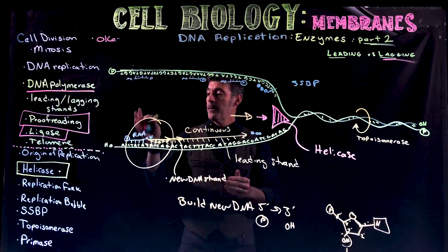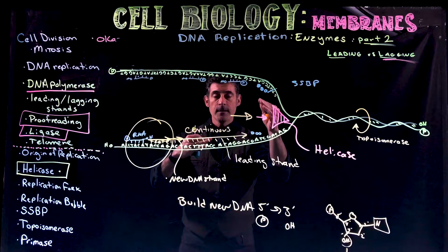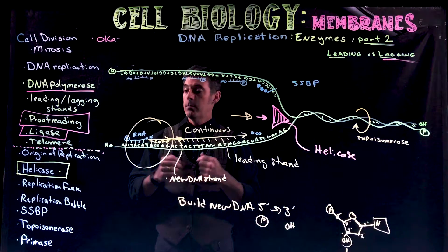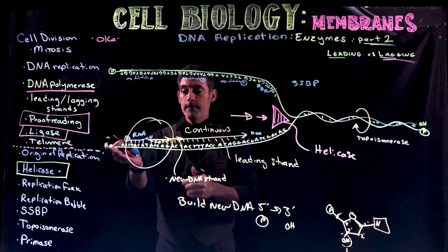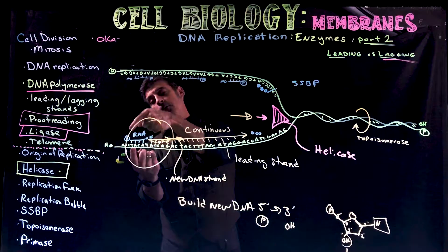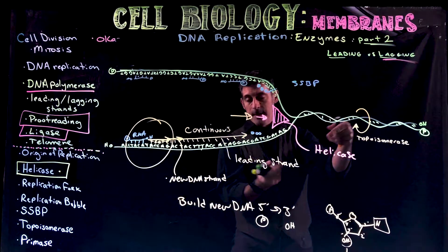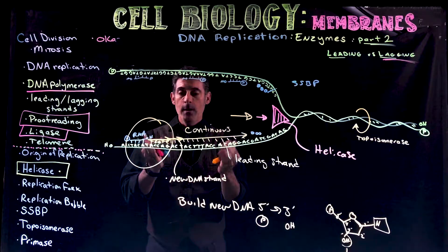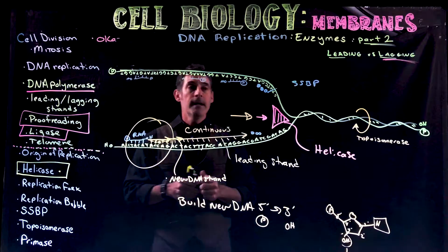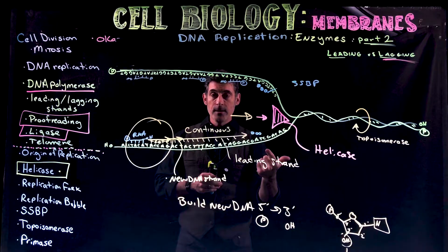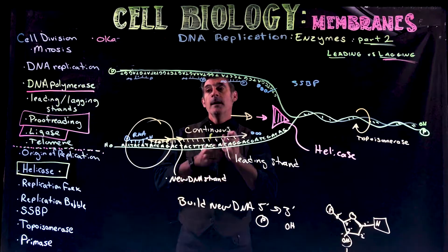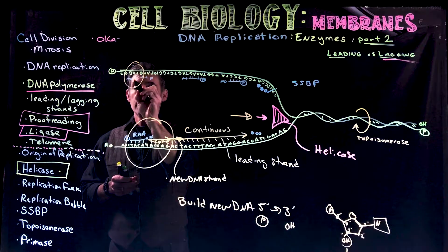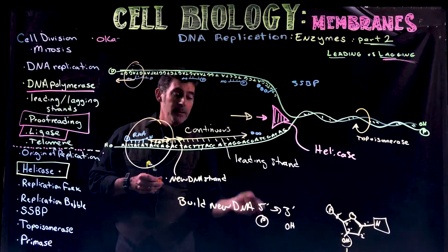Our problem is that the two template strands that were pulled apart run anti-parallel to one another. So this is a three prime end here, and anti-parallel new DNA is going five prime to three prime. It's reading three to five — that's the way it reads. Up on the other strand, we're going to get replication as well, so there's another DNA polymerase.